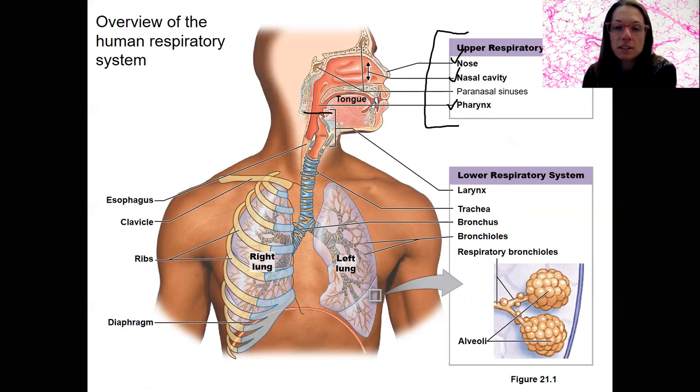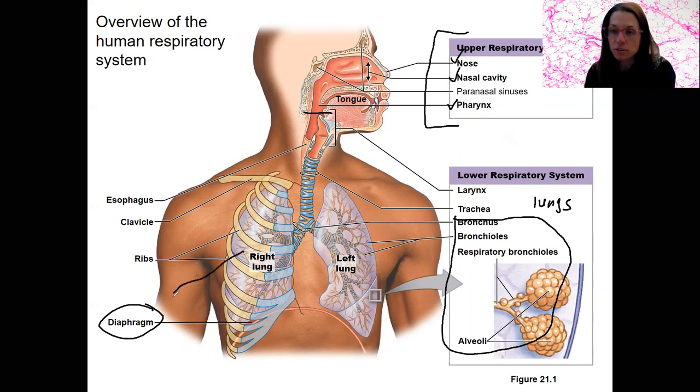The lower respiratory system is the larynx, trachea, and then all of these structures are part of the lungs. There's a couple other respiratory structures that are secondary. So diaphragm and the muscles of the ribs. There's skeletal muscles in between each of your ribs. These are skeletal muscles that are important for respiration as well, because they're going to allow our thoracic cage to change volume and allow air to go in and out.